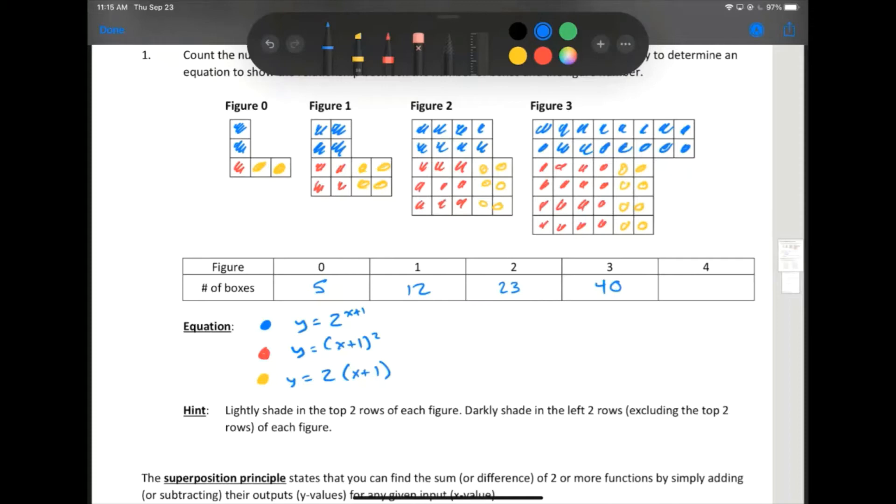That's the number of blue boxes, red boxes, and yellow boxes, but the total number of boxes is actually going to be the sum of all three of those things. So y equals 2 to the x plus 1 plus x plus 1 squared plus 2 times x plus 1. And I think it's safe to say that would be an extremely hard thing to figure out if we hadn't shaded the boxes differently and seen the pattern broken down into its pieces.